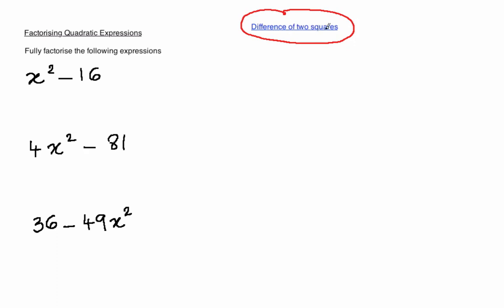The name tells you exactly what you see. It is the difference, the subtraction of two squared concepts. This is actually x squared and this is actually 4 squared. By writing this down, I have actually done the first step in factorising this expression.